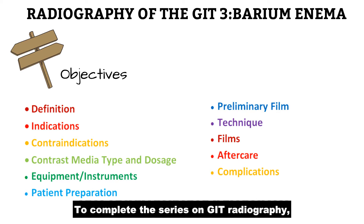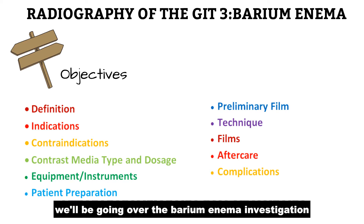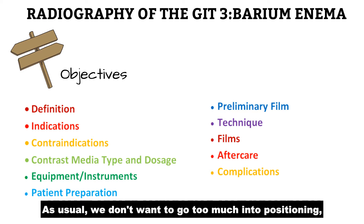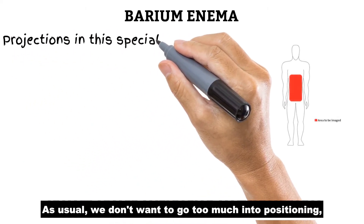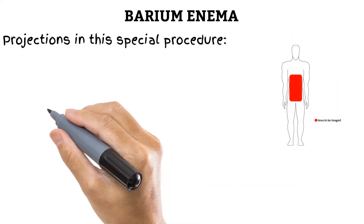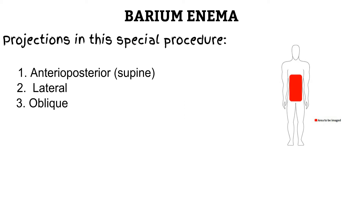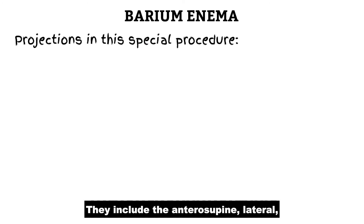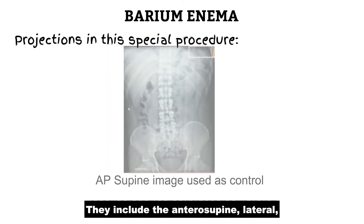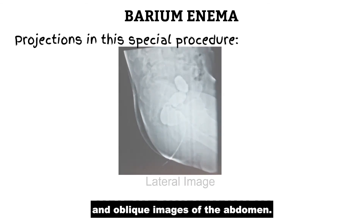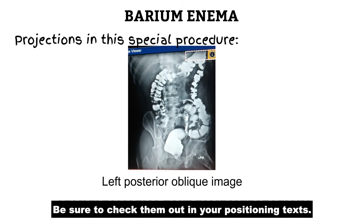To complete the series on GIT radiography, we will be going over the barium enema investigation in the next set of videos. As usual, we don't want to go too much into positioning, so we will list out the radiographic projections utilized in the barium enema investigation. They include the anterio-supine, lateral, and oblique images of the abdomen. Be sure to check them out in your positioning text.